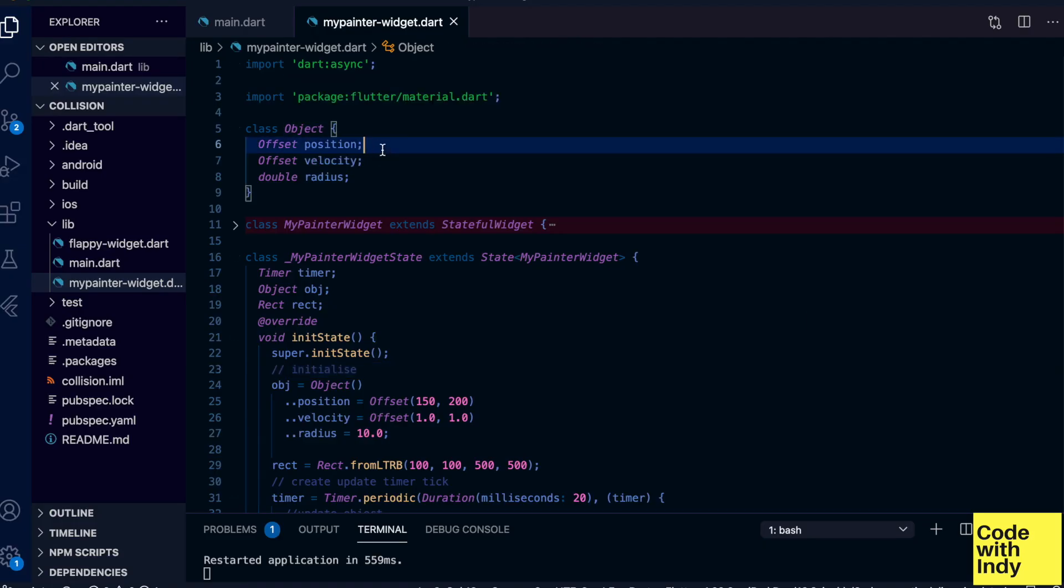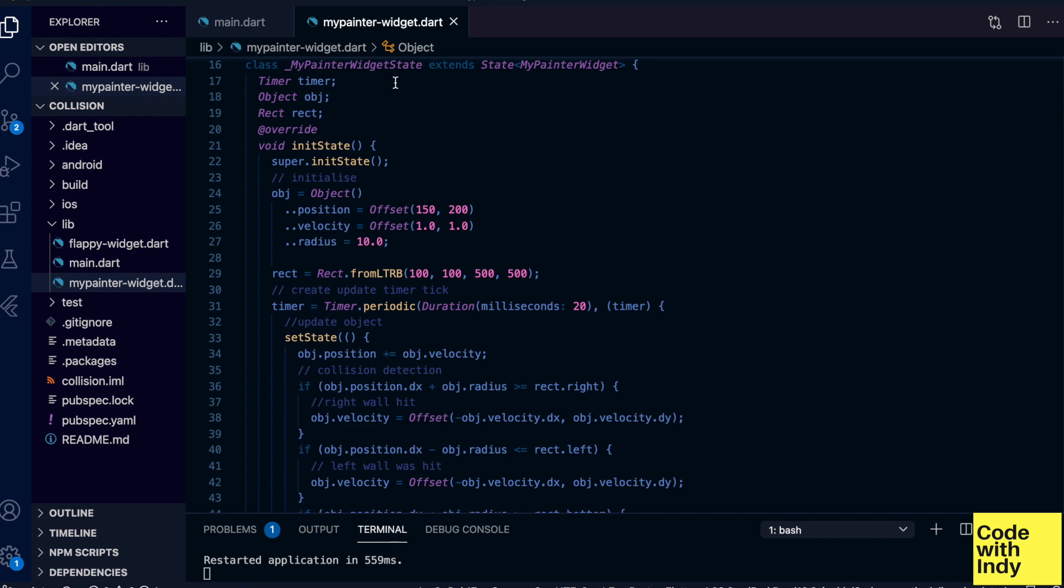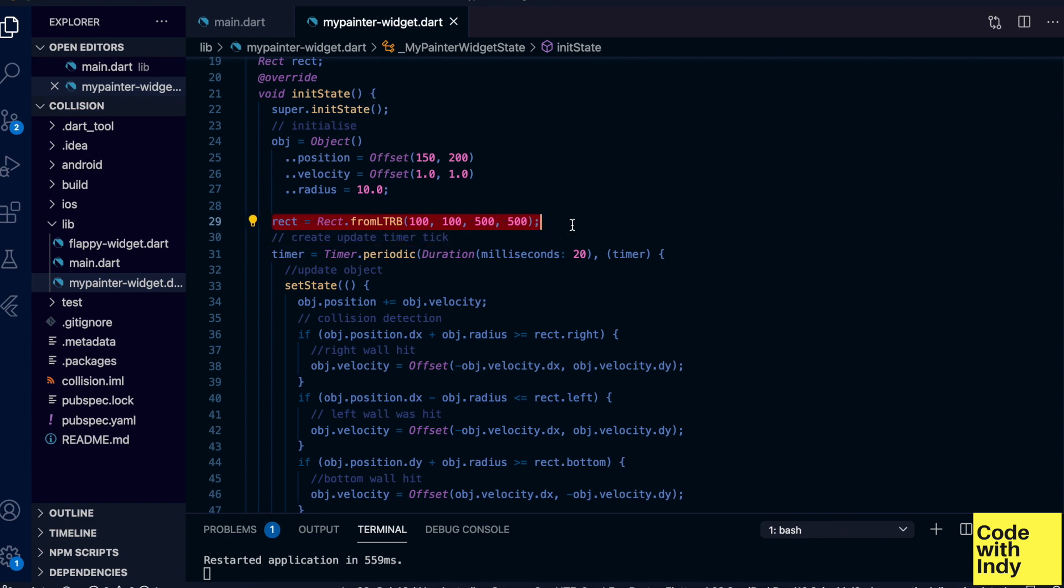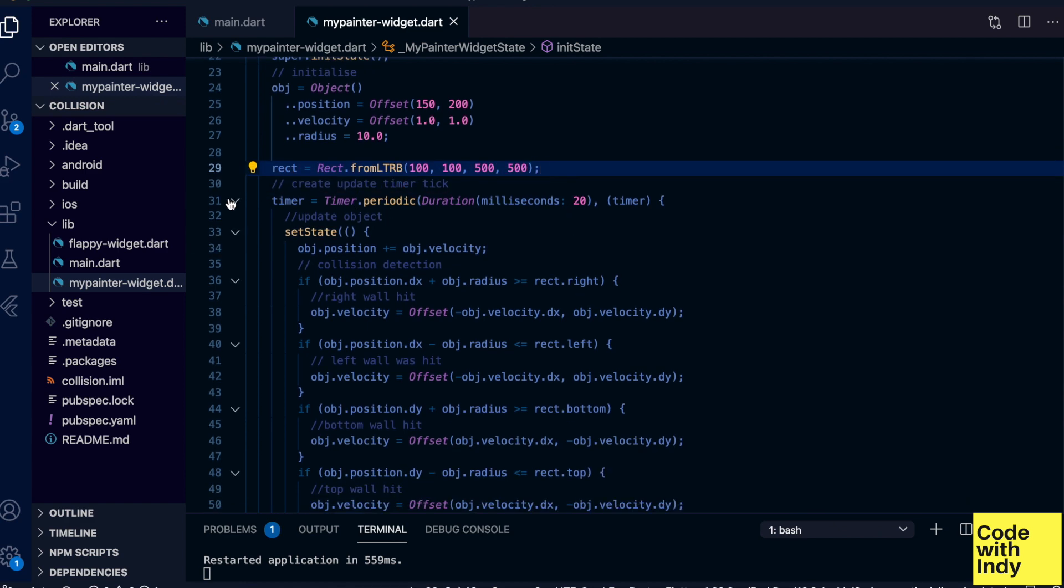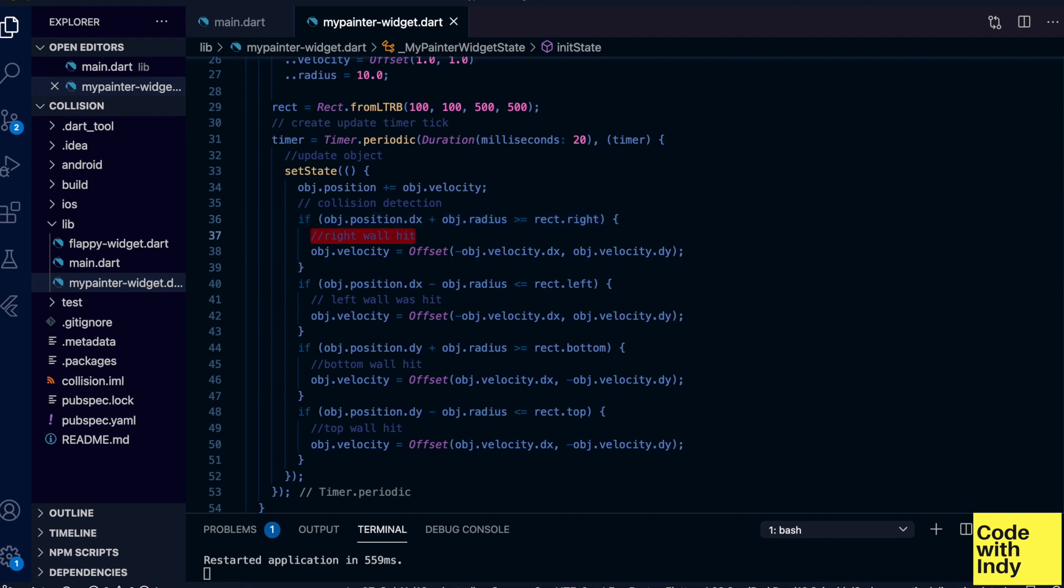Here's the class that implements an object. It has these properties: position, velocity, and radius. Then, in init state, we create an object and initialize it. As you can see, we give the object horizontal and vertical velocities of 1. Then we create a rect representing the walls. Here we create a timer and at each tick, we update the object position by adding the velocity.